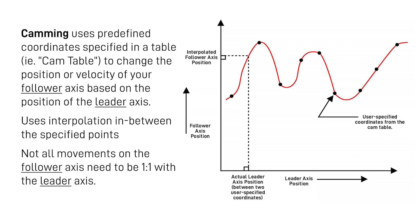That is what gives our follower axis this snake-like appearance. In between each cam table point, the controller actually uses a user-specified interpolation mode to smoothly go in between each of these follower points. The main point here is that camming does not need to use a strictly linear relationship between two axes. However, you are limited by the fact that a specific cam table is required for these different points.